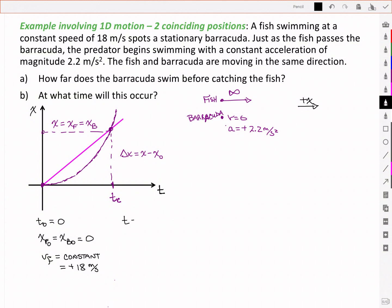Sometime t later, a point that we'll call tc, their positions again coincide. So we'll call this x, which is equal to the position of the fish and the position of the barracuda. The velocity of the fish is unchanged.